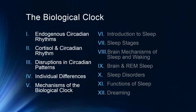We'll start off by talking about the biological clock. Today we're going to talk about endogenous circadian rhythms, cortisol and the relationship with circadian rhythms, what happens when we have disruptions in our circadian patterns — doing things like traveling, changes in time in the spring and fall. We'll talk about individual differences and then finish up with some mechanisms of the biological clock.